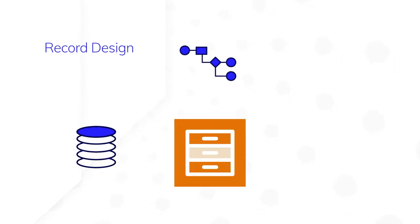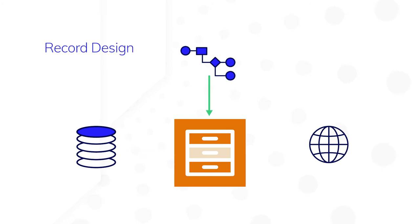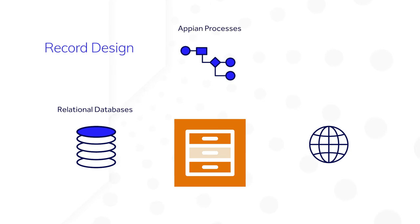The second thing to consider is records. In Appian, data is managed primarily through record types. Record types help you define the data model used in your application. Users can view and take action on data using records. Record type data can come from a variety of places, including relational databases, Appian processes, and web services. You can create record type relationships to connect data across records and use them to create integrated views of data from different sources.